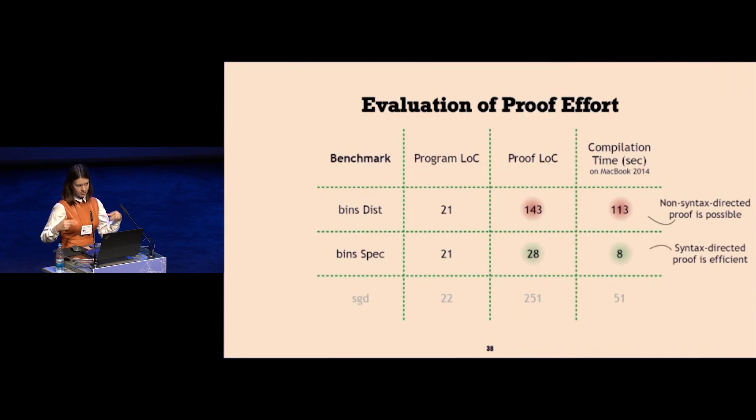The interesting part about this table is it compares the size of program to size of proof to the compilation time. For bins dist, I presented the non-syntax directed proof, which was interesting and good to have. But the point is that relational types are particularly good for syntax directed proofs. So for bins spec, the proof is terribly boring. It's almost the same structure and the same size as the program. This is where relational types shine. They significantly improve the size of the proof.